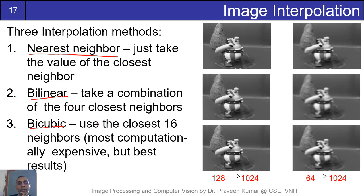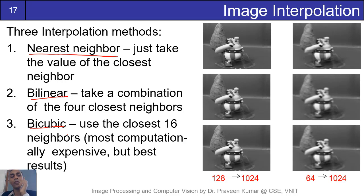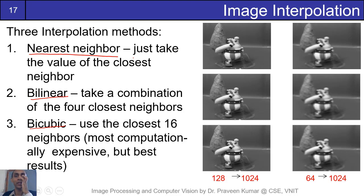We will talk about bilinear in detail later on. In bicubic interpolation, we take the nearest 16 neighbors and go for a more accurate interpolation using a bicubic equation. This gives the best result obviously, but will be a little computationally expensive. Nearest neighbor gives the worst result but is very fast. The example is shown here — we have taken a 64×64 image and stretched it to 1024. The first row shows nearest neighbor interpolation, the second is bilinear, and the last is bicubic.